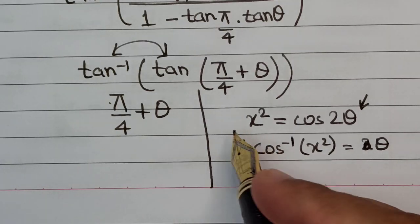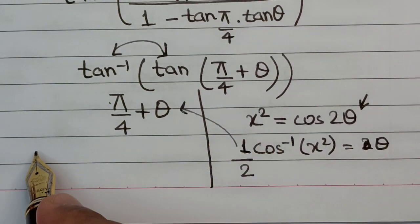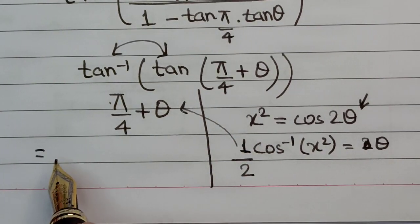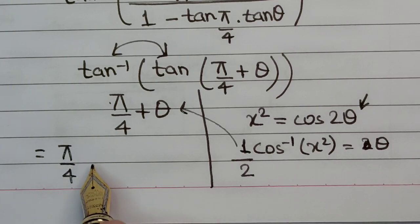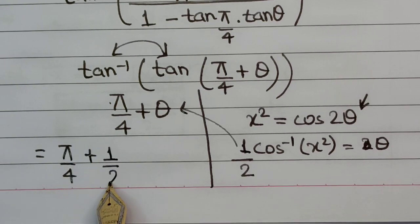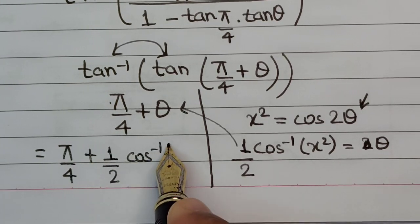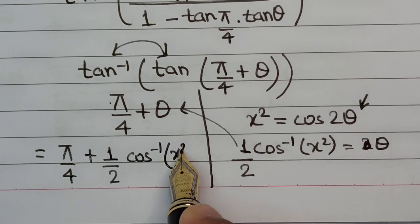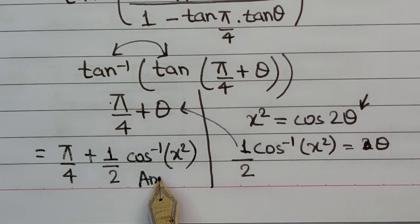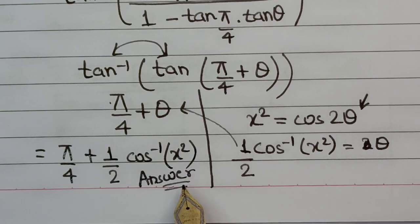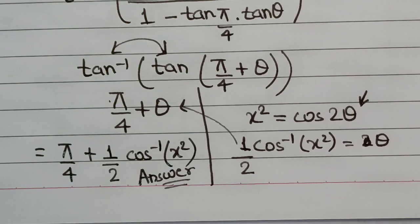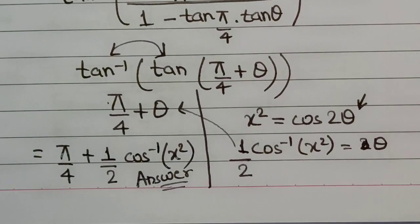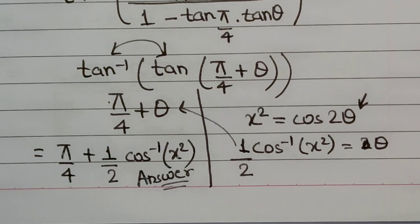Substituting back, the final answer is π/4 + (1/2)·cos⁻¹(x²). This is the final reduced simplest form we were looking for. I hope you liked this video — for more such videos please subscribe to our YouTube channel, thanks for watching.